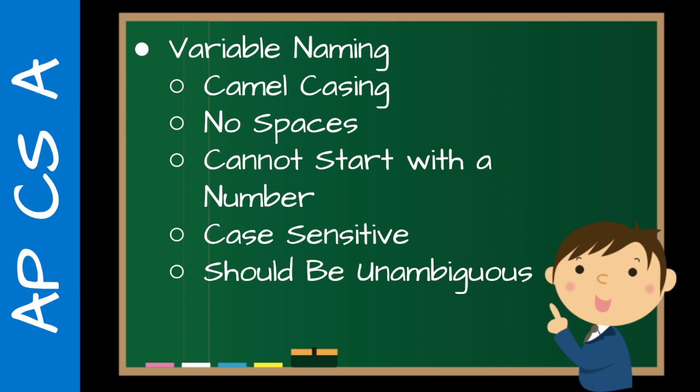Then there's variable naming. Students are really bad at this because they're lazy — they just want to call everything x, y, z, or whatever, and they don't want to type. But I'm really strict about variable naming. Especially as the code gets more and more complex, the naming becomes more and more important.